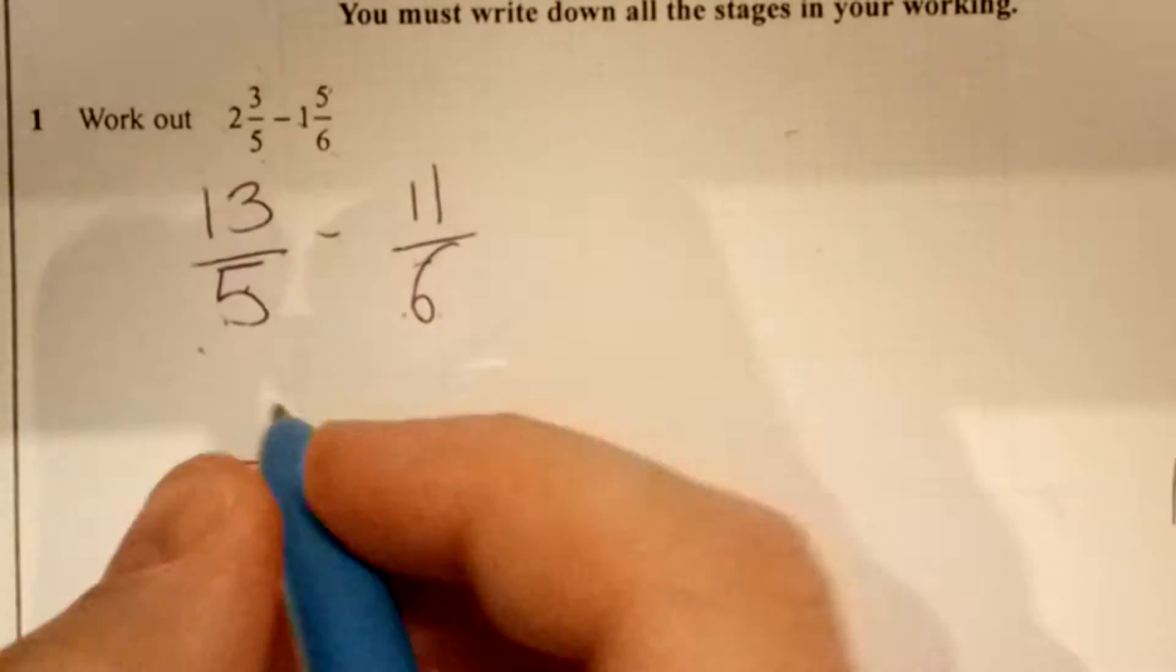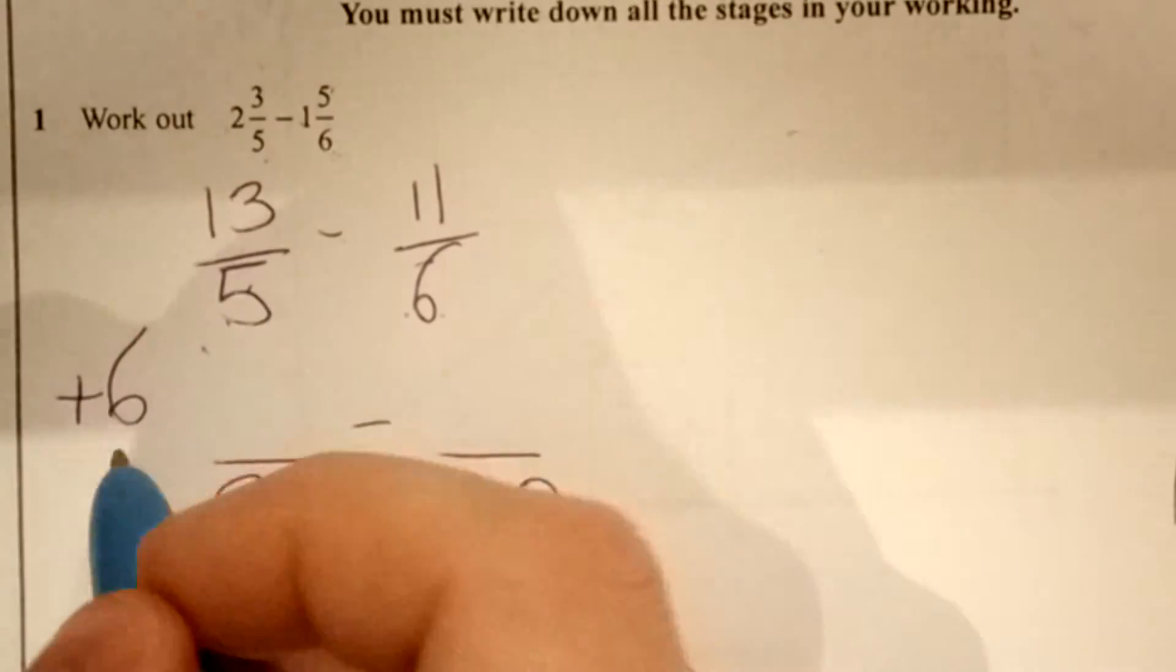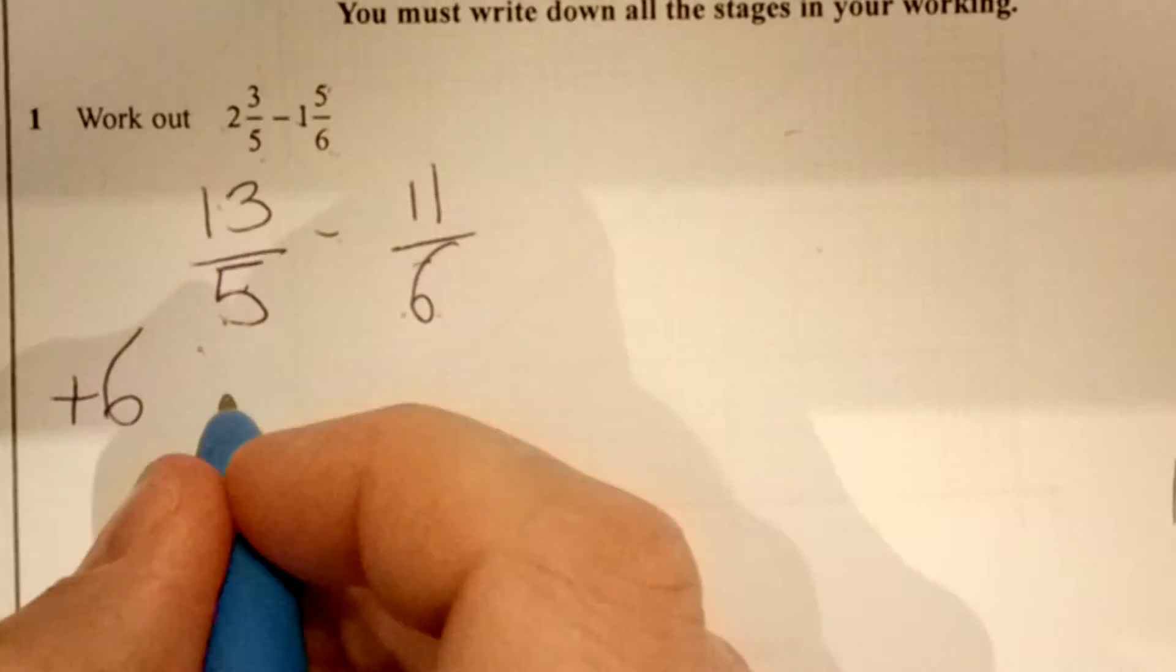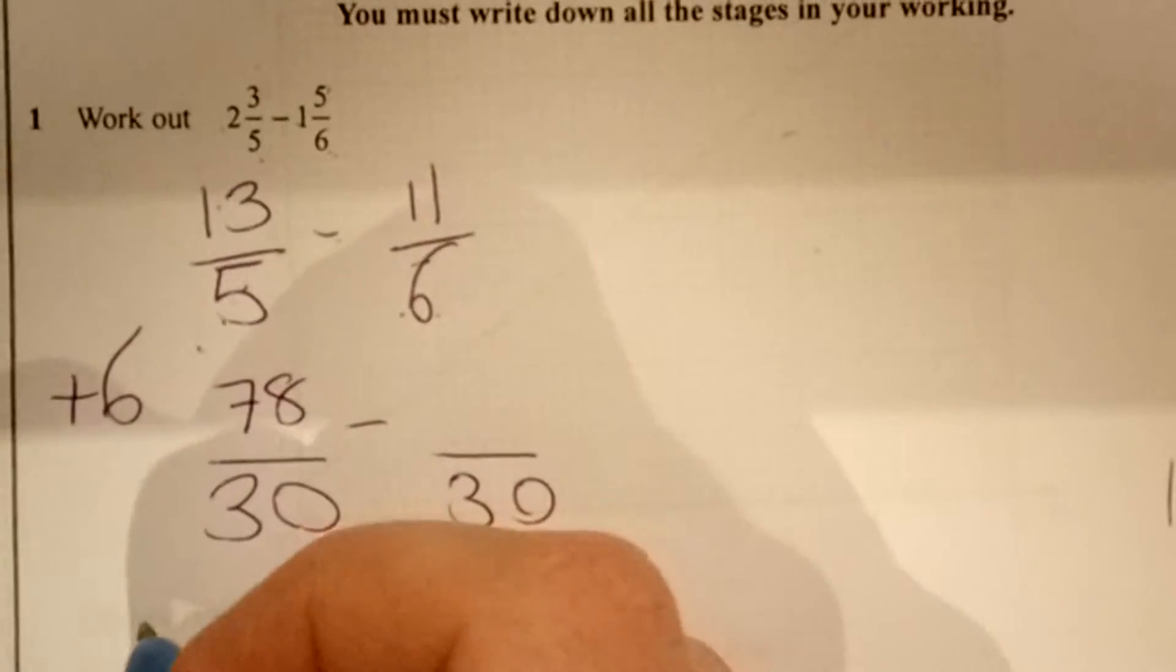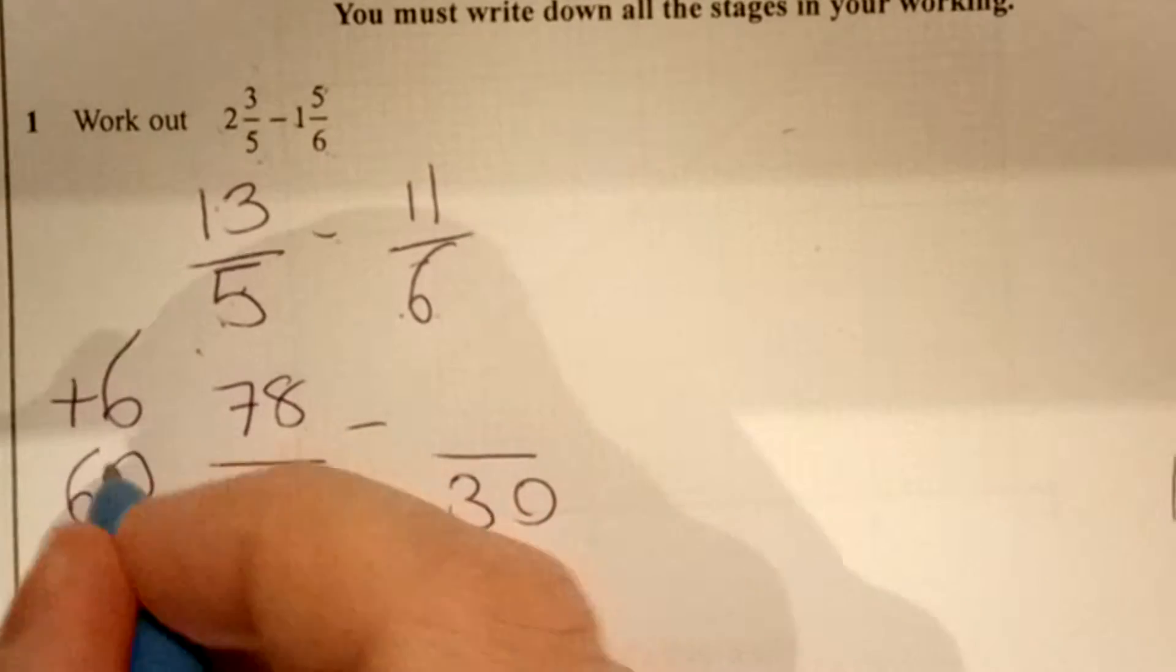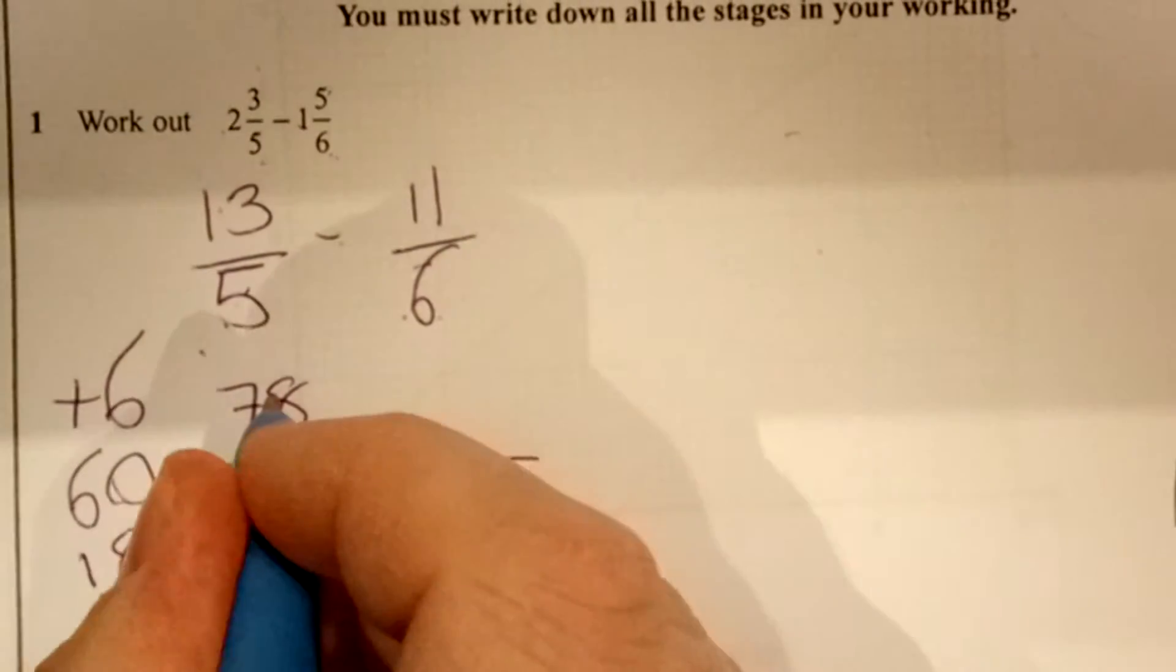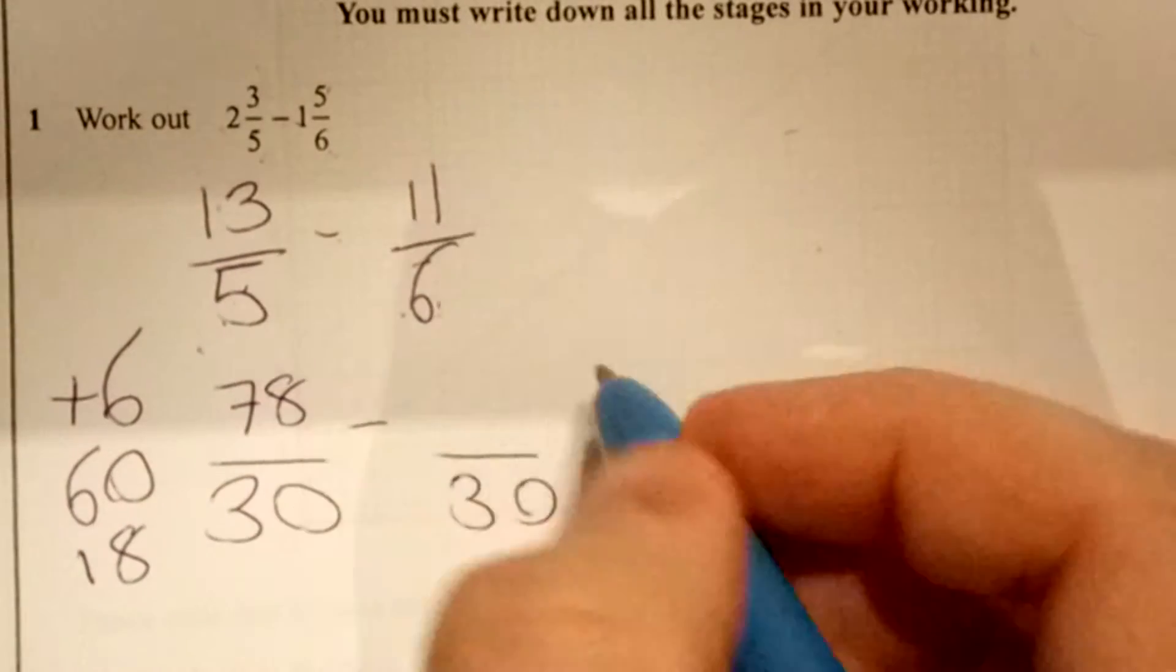To get 5 to 30 we have to multiply it by 6, so we have to multiply your 13 by 6 which happens to be 78. If you find that a bit hard, times by 10 to give you 60 and then times it by 3 to give you 18 and add it together to give you 78.